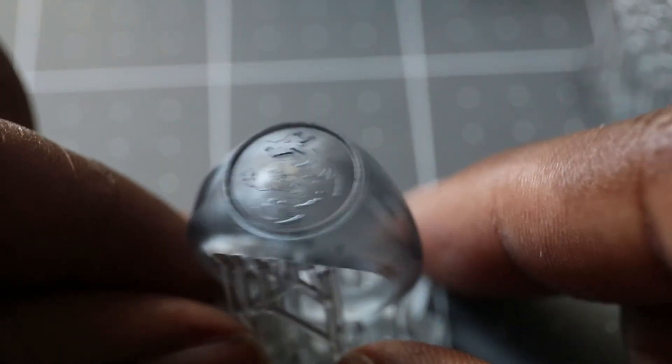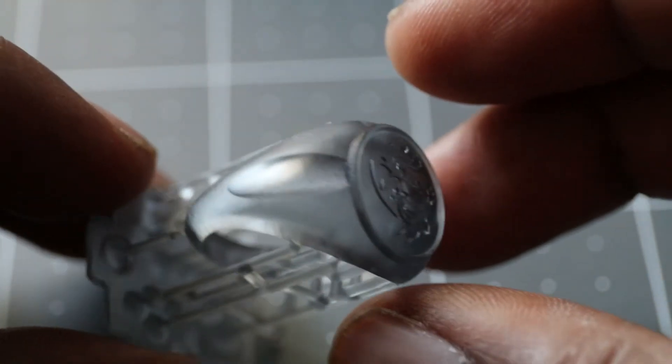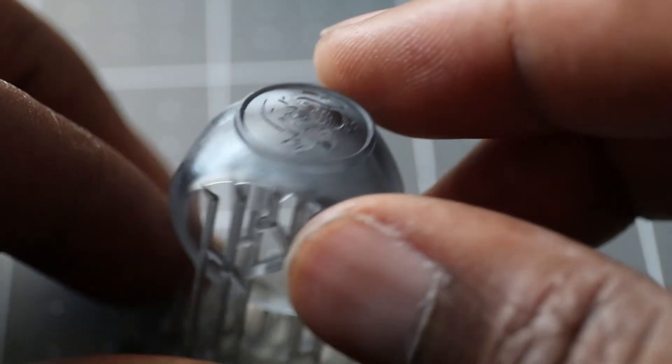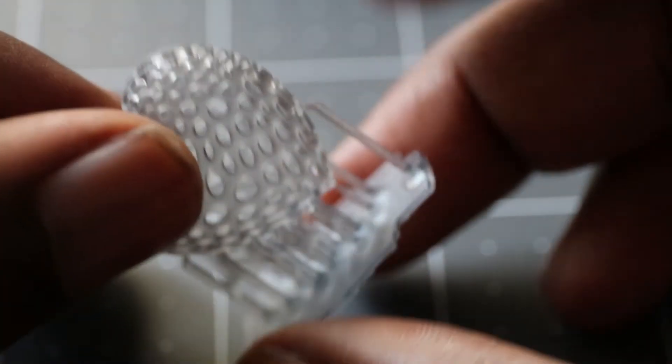Now we're taking a look at the dragon ring. I printed this print out earlier in Siraya Tech Simple. The dragon symbol on top came out good on that print, but I think this print came out better.